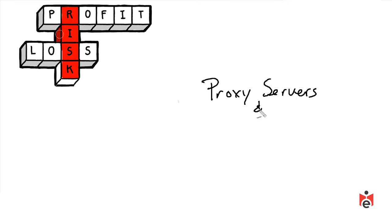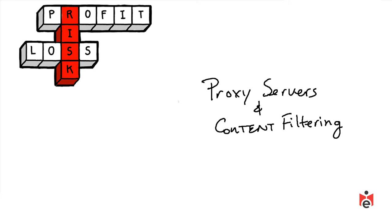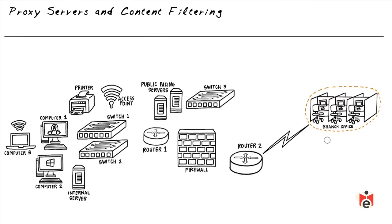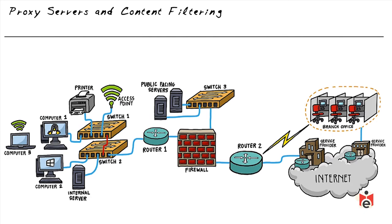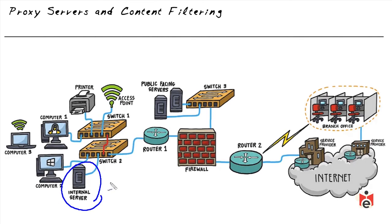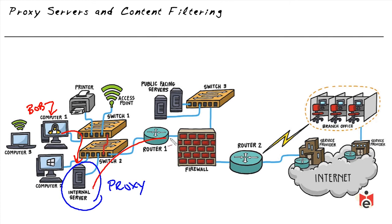Companies don't want liability from employees visiting malicious websites from work computers. Two techniques that help are proxy servers and content filtering. We set up a proxy server — for example an internal server — and configure employees' computers via group policy so their internet requests are sent to the proxy. A proxy acts on behalf of someone else: the web proxy takes Bob's request and initiates its own request to the internet resource.